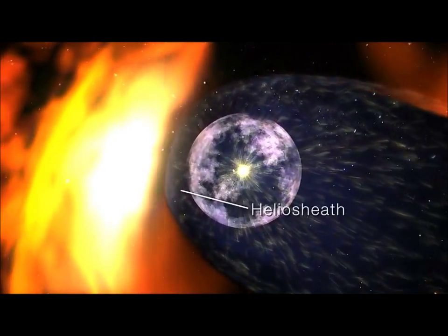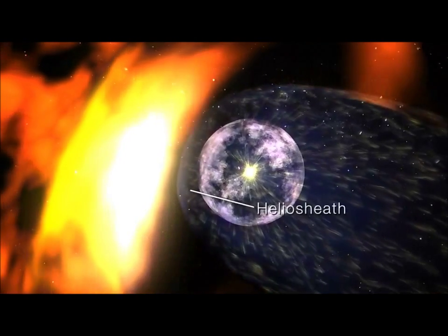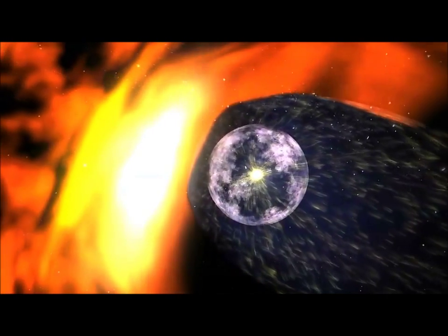Outside this is the heliosheet, where the solar wind slows to a stop, and the magnetic field is bent back by the ionized interstellar wind.